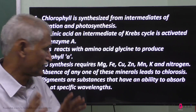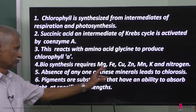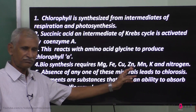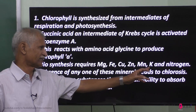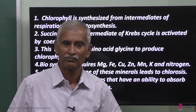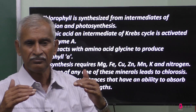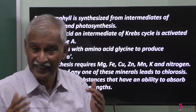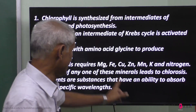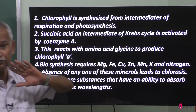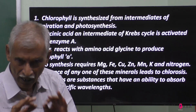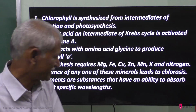For chlorophyll synthesis, it needs magnesium, iron, copper, zinc, manganese, potassium, nitrogen, water, and coenzyme A. These elements are required for the production of chlorophyll A.